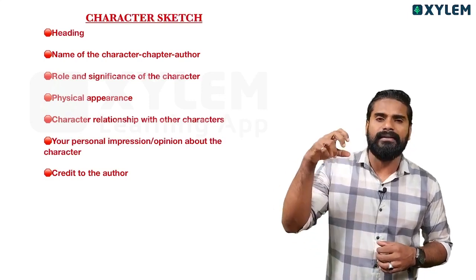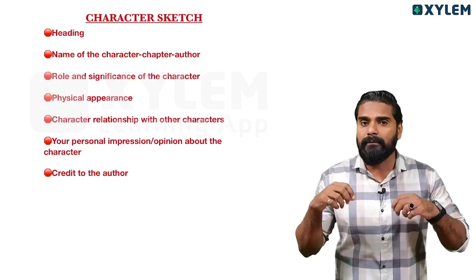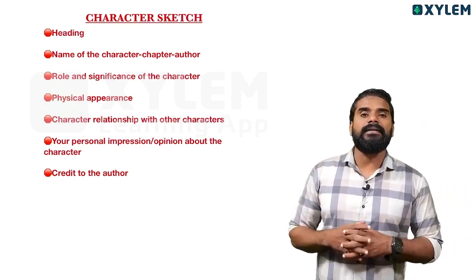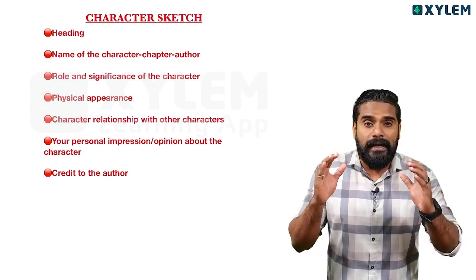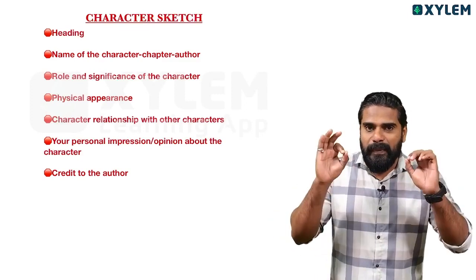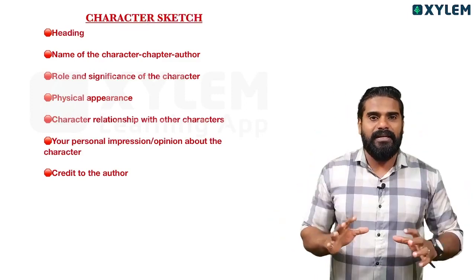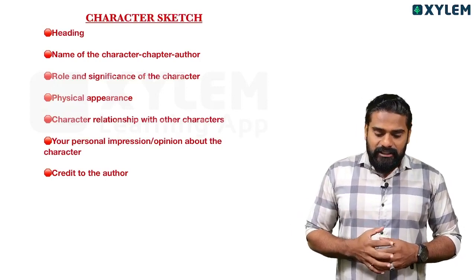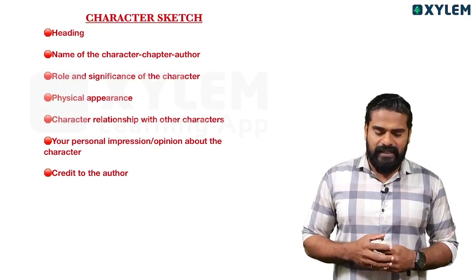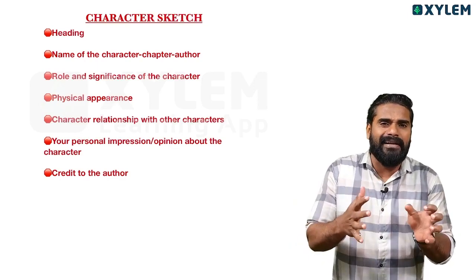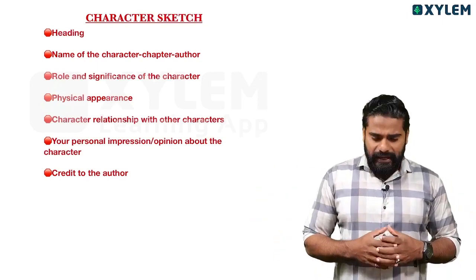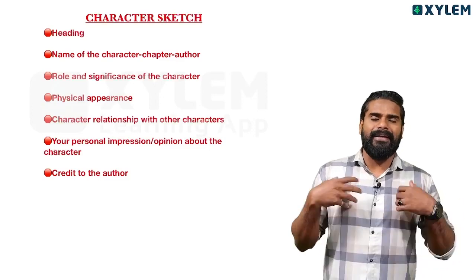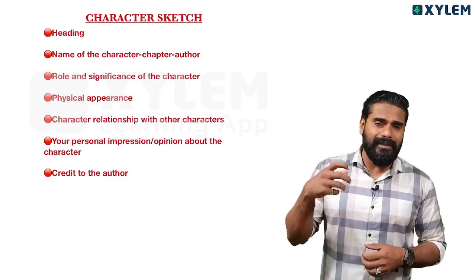The character's importance in the story — how significant they are — should be written in a few sentences. Then, physical appearance must be covered. After that, cover the relationship with the other characters. Finally, give your personal impression and your opinion about the character.